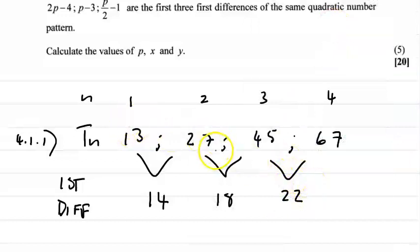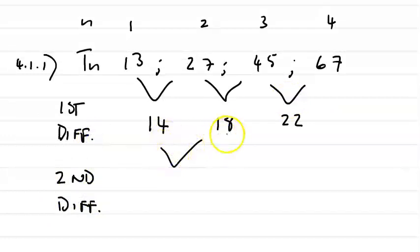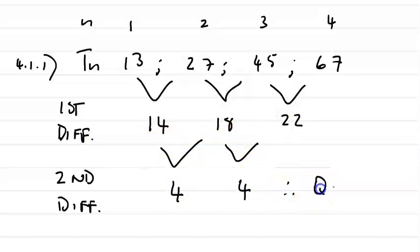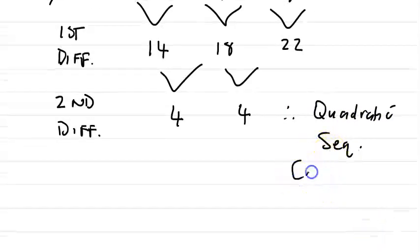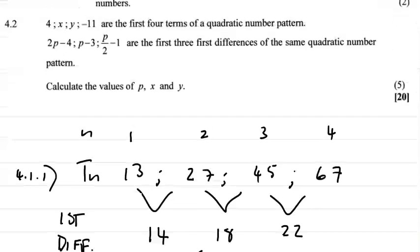Similarly, with the second difference: 18 minus 14 is 4, and 22 minus 18 is 4. Therefore, we can confirm that this is a quadratic sequence because we have a constant second difference. That's our solution to the first question.